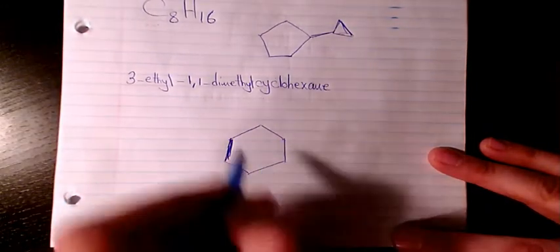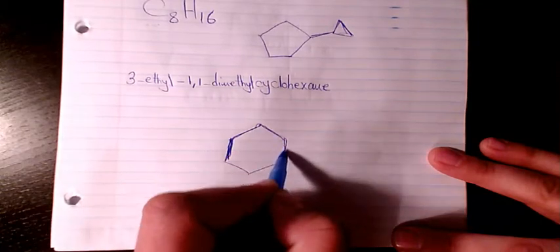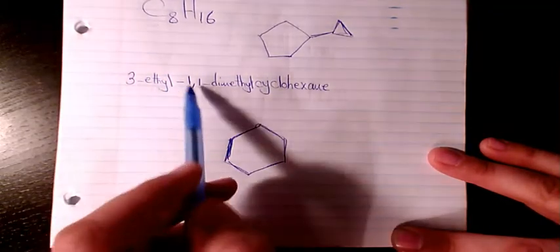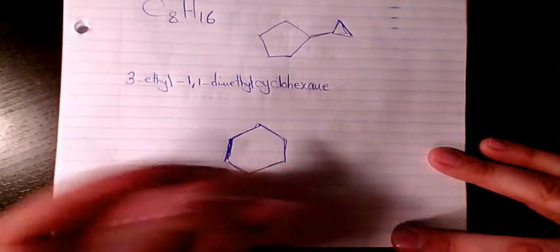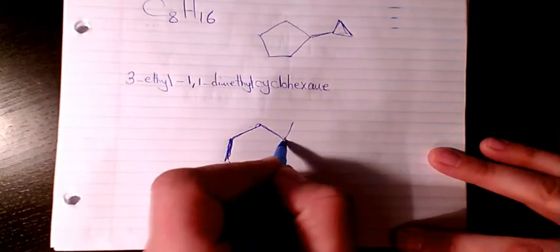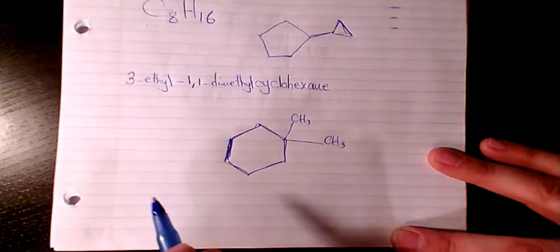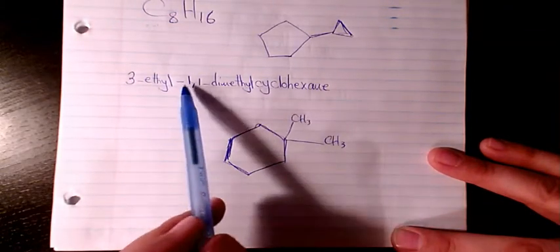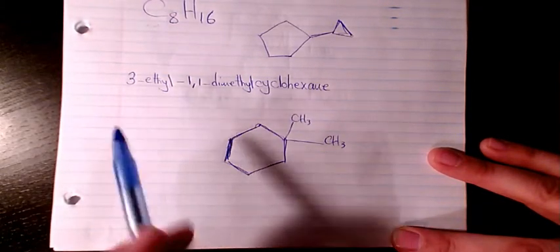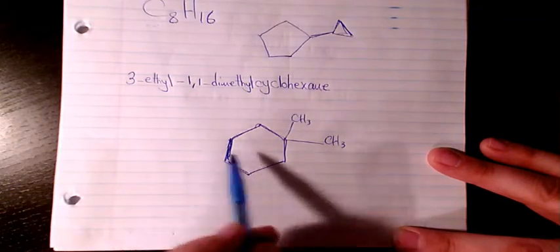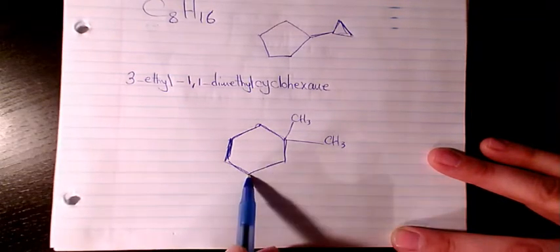Yes, that's single bond, all of them are single bonds. Here we have 1,1 so we can start it anywhere. So let's say one and one dimethyl or dimethyl and three ethyl, so it has to be one, two, three. Three ethyl.